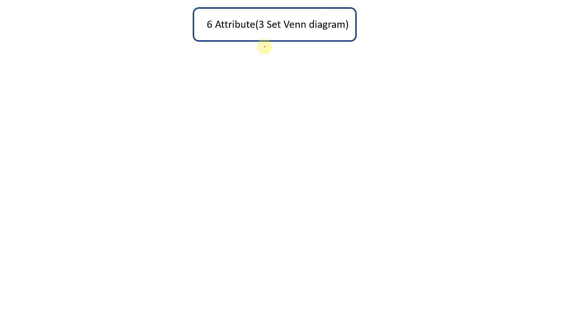Welcome back. Today we learn a very important concept of solving questions of six attribute three set Venn diagram, that is also called advanced three set Venn diagram. What exactly is it? Let's suppose we have three sets.